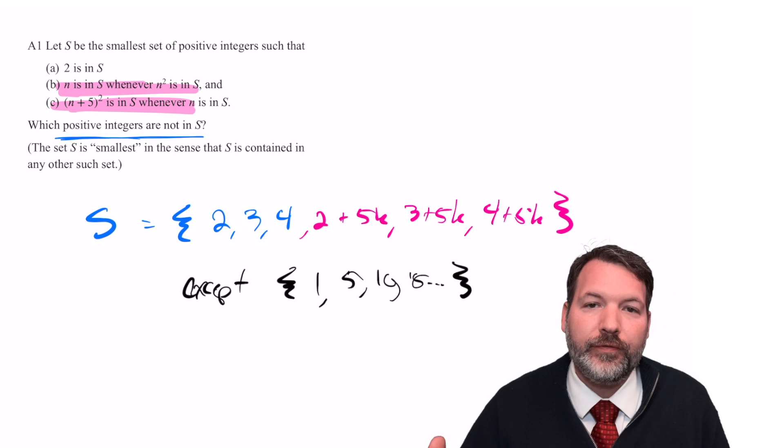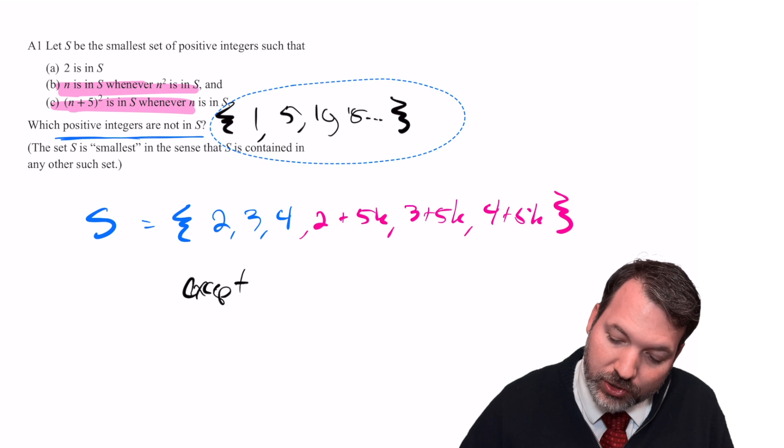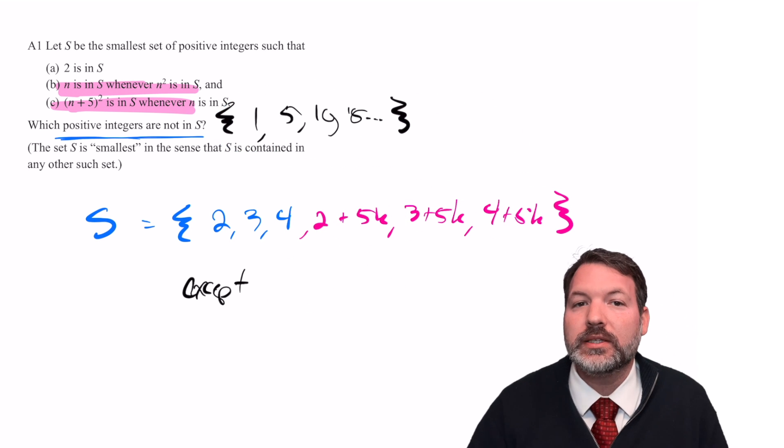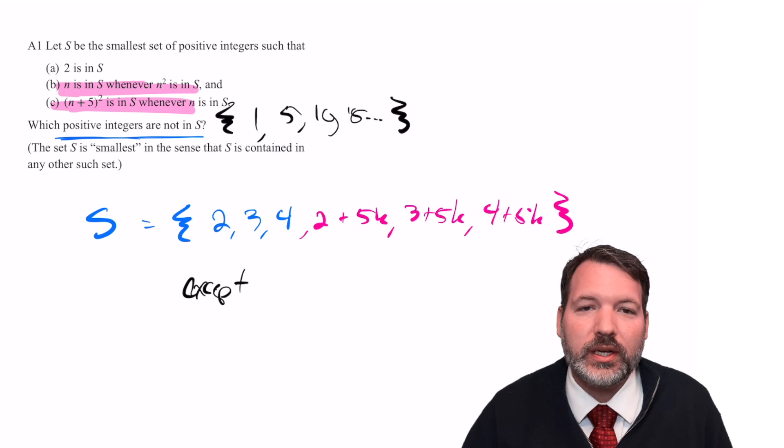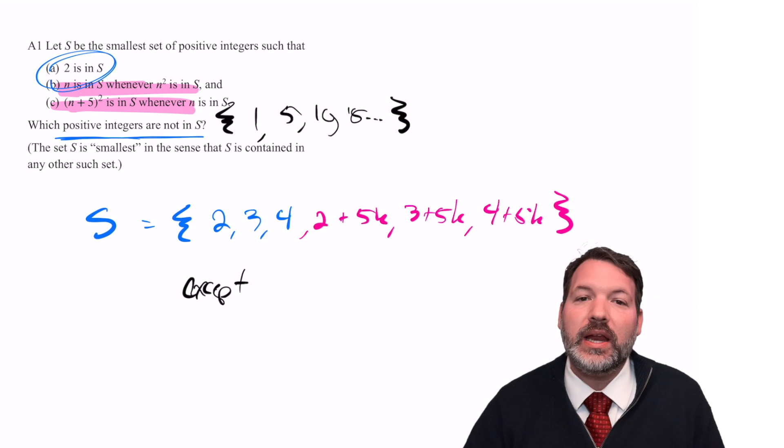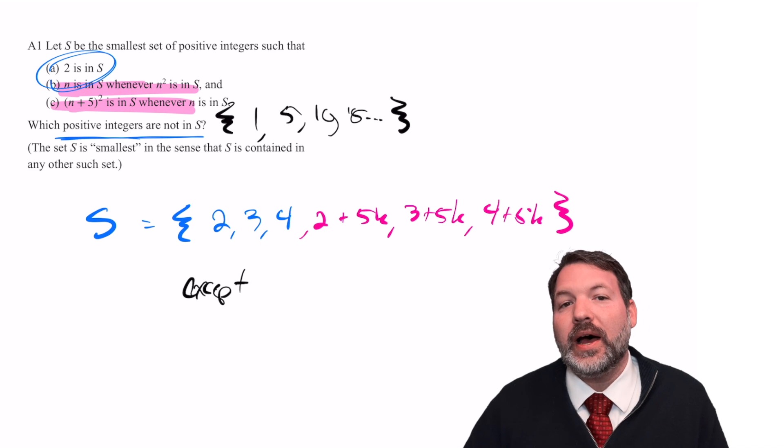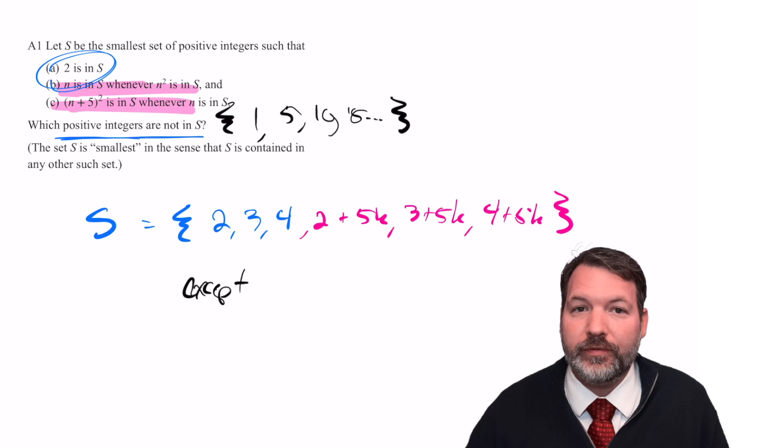1, and then 5, and all the multiples of 5 greater than 5. Being that that was the question, what is not contained in S, we are done. The smallest such set that obeys these rules beginning from 2 has to contain every positive integer other than 1, and then 5, and all the multiples of 5 greater than 5. 10, 15, 20, on and on forever.